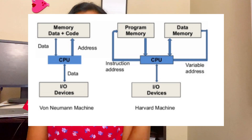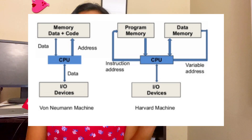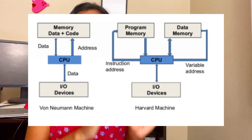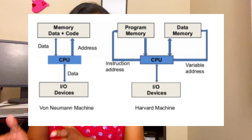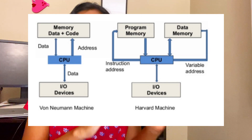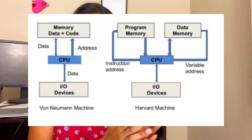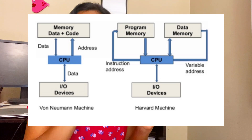The basic difference is in the memory arrangement. In Von Neumann architecture, there is only one single memory unit where we store both instructions and data together — there is no separation between data memory and program memory. Both are stored in a single place and accessed through the same bus. The main problem is congestion and latency since everything shares a single bus.